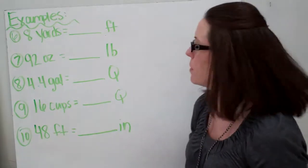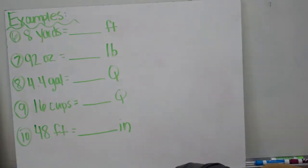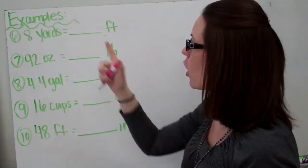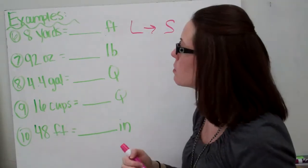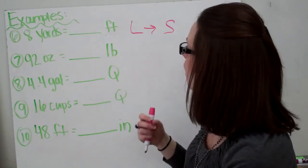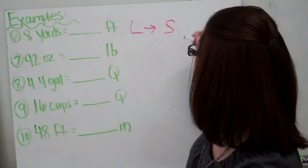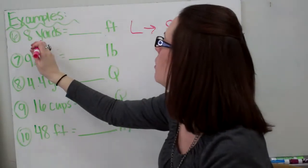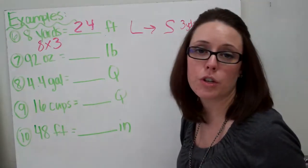A few examples. We're going from eight yards to blank feet. We know we are going from a larger unit to a smaller unit because yards is bigger than feet. Because we're going from a larger to a smaller unit, we are going to multiply. We know that three feet equals one yard, so eight times three gives us 24 feet. So 24 feet is equal to eight yards.